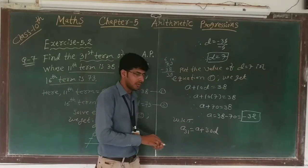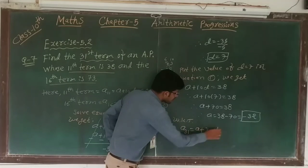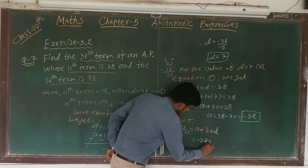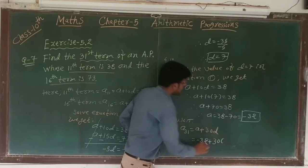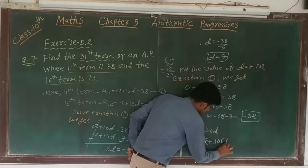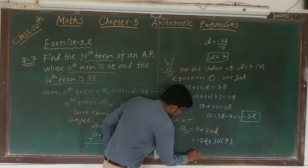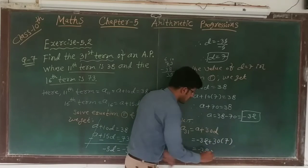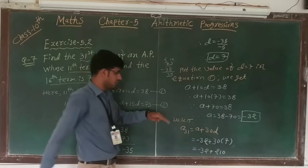So the value of a is minus 32, minus 32 plus 30 times 7. So minus 32 plus 30 times 7, that's 210.